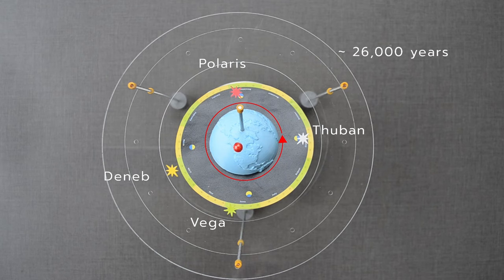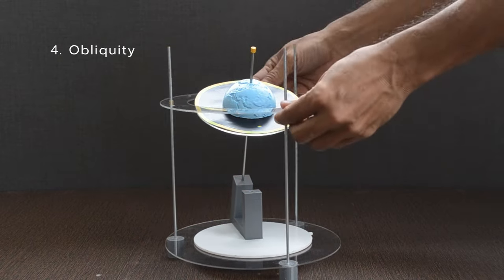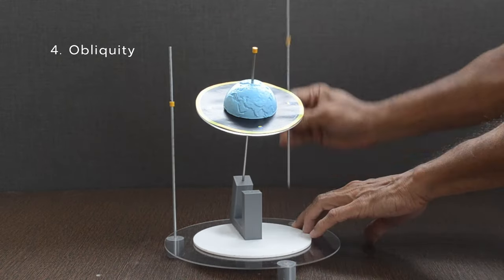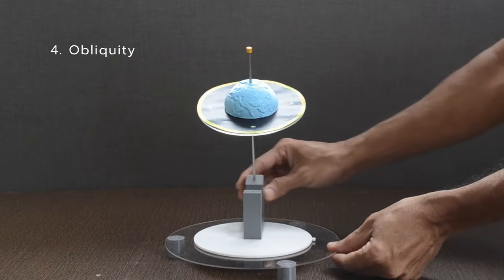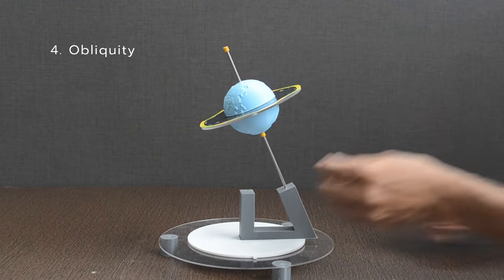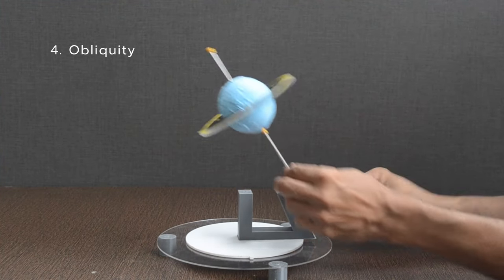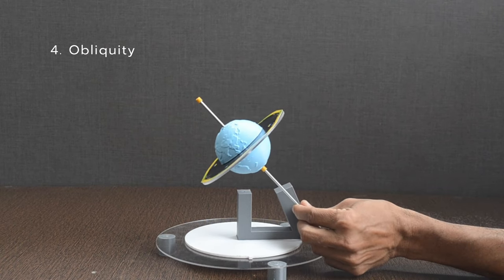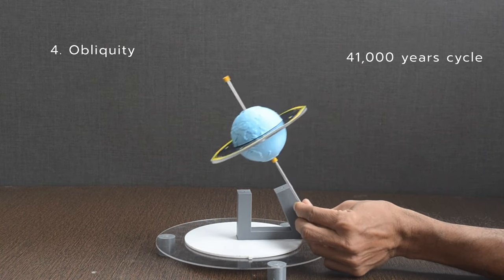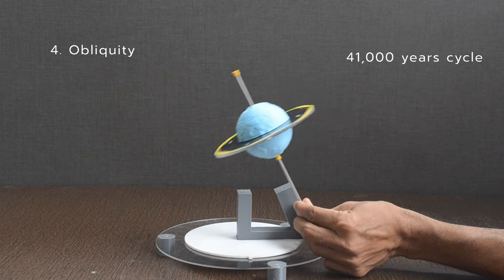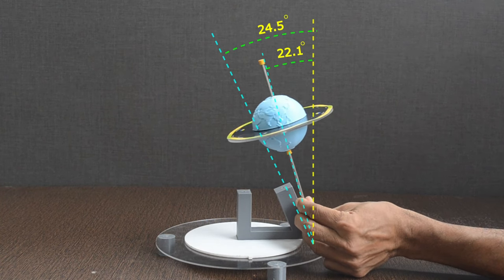Fourth motion is the obliquity of the earth axis. It moves between 22.5 degrees and 24 degrees. Obliquity is the reason for our seasons. Over the last million years, it has varied between 22.1 degrees and 24.5 degrees with respect to the earth's orbital plane.